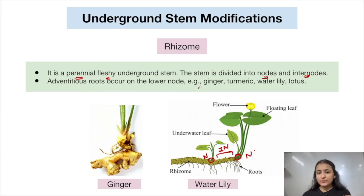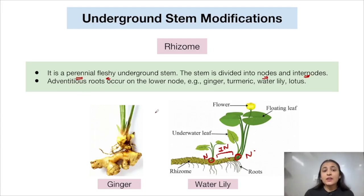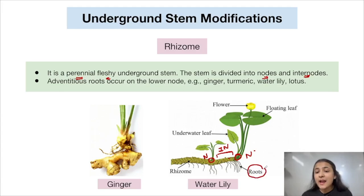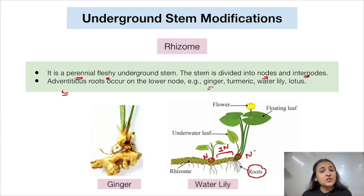Ginger is an example of an underground stem modification. The part of ginger that we eat is a modified underground stem known as the rhizome. It also comprises nodes and internodes — the lines visible on ginger are the node areas, and the region between two nodes is the internode. Certain adventitious roots are also arising from this rhizome.